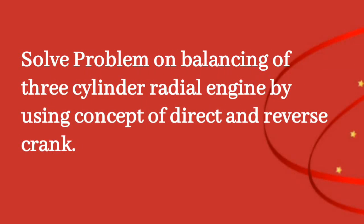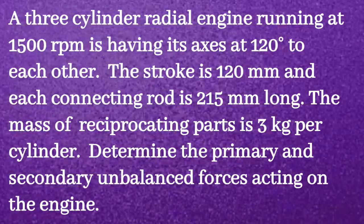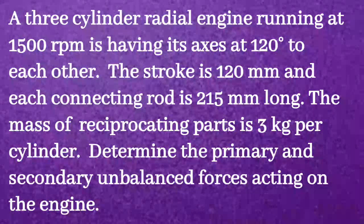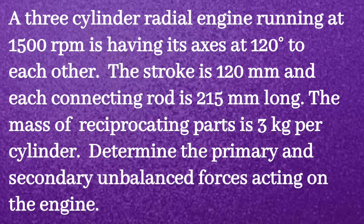Solve a problem on balancing of 3-cylinder radial engines by using the concept of direct and reverse crank. A 3-cylinder radial engine running at 1500 RPM has its axes at 120 degrees to each other. The stroke is 120 mm and each connecting rod is 215 mm long. The mass of reciprocating parts is 3 kg per cylinder. Determine the primary and secondary unbalanced forces acting on the engine.